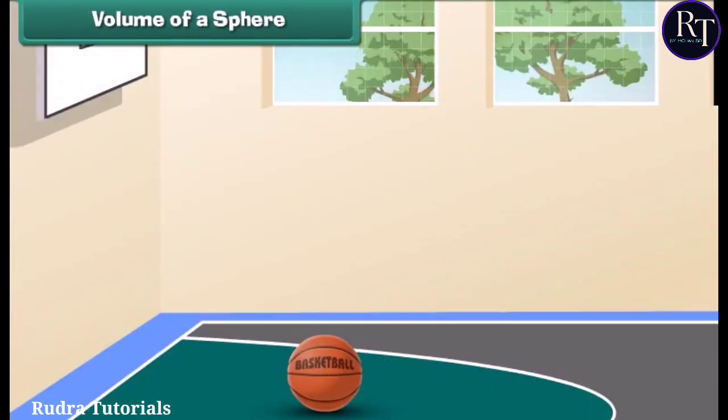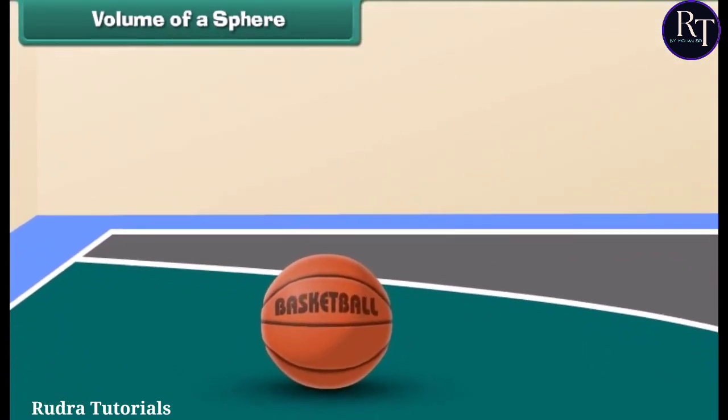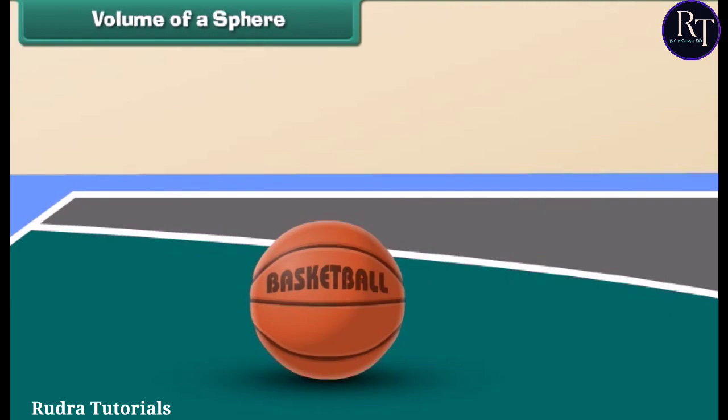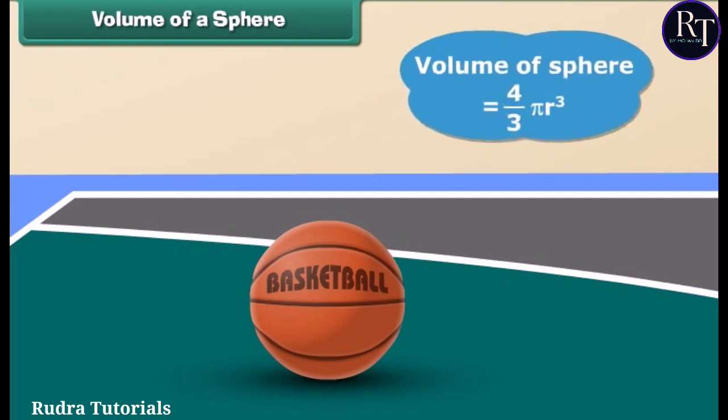What do we call this round ball? Yes, it's a sphere. It looks same from every angle, isn't it? The formula to find the volume of this sphere V is 4 over 3 pi R cube.